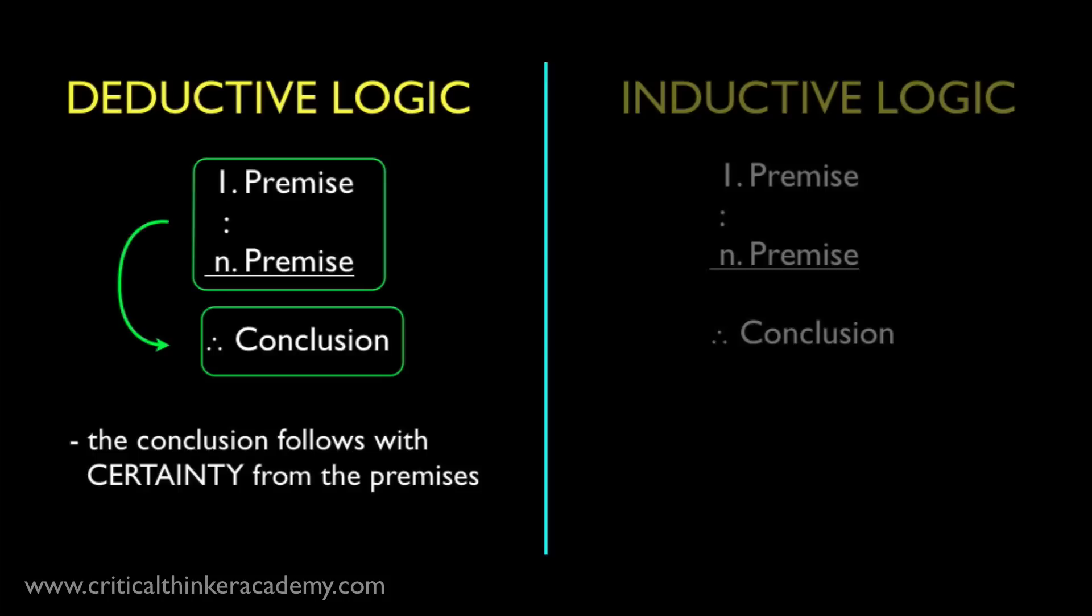Now in a deductive argument, the intention is for the conclusion to follow from the premises with certainty. And by that we mean that if the premises are all true, the conclusion could not possibly be false. So the inference isn't a risky one at all. If we assume the premises are true, we're guaranteed that the conclusion will also be true. For those who have worked through the course on basic concepts in logic and argumentation, you recognize this as the definition of a logically valid argument.